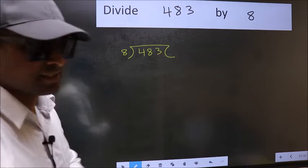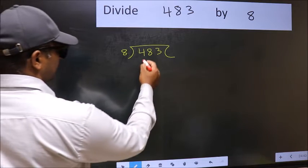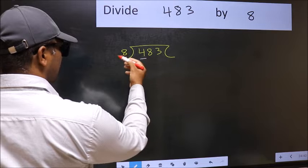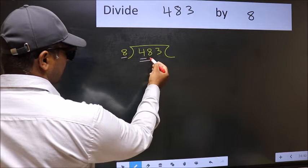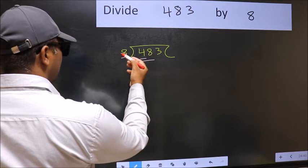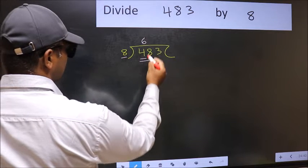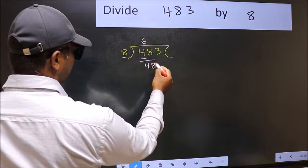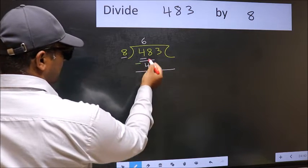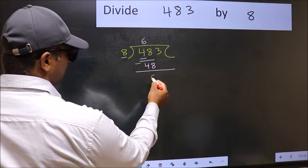Next, here we have 4 and here 8. 4 is smaller than 8. So we should take two numbers, 48. When do we get 48 in 8 table? 8, 6, 48. Now we should subtract. 48 minus 48, 0.